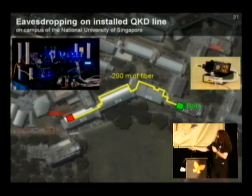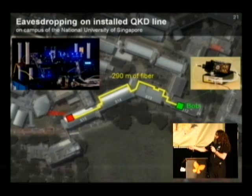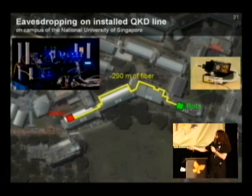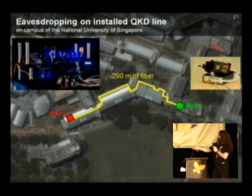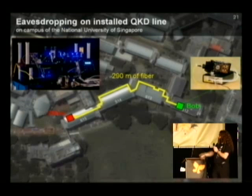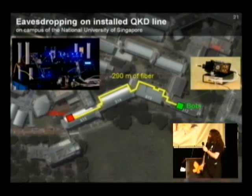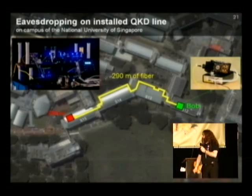Here you can see Alice's setup: the entangled pair source with the blue laser on. You can see Alice's polarization analyzer and Alice's rubidium clock, which provides a time reference for a timestamp unit. In Bob, you can see Bob's polarization analyzer unit with four detectors and Bob's timestamp unit. We ran quantum key distribution communication.